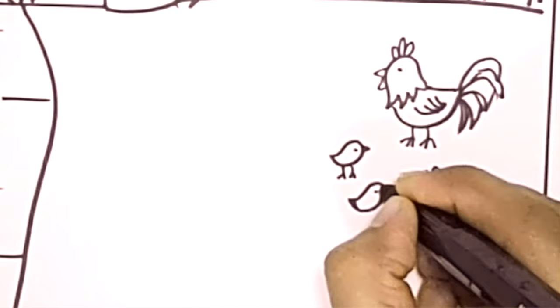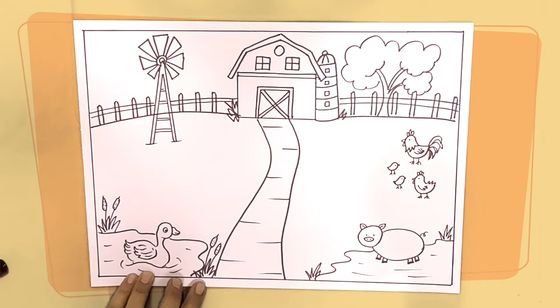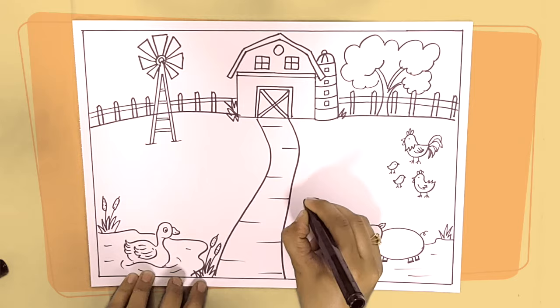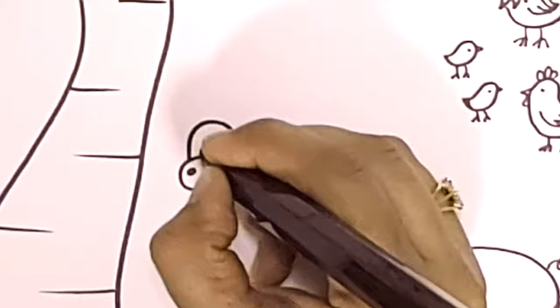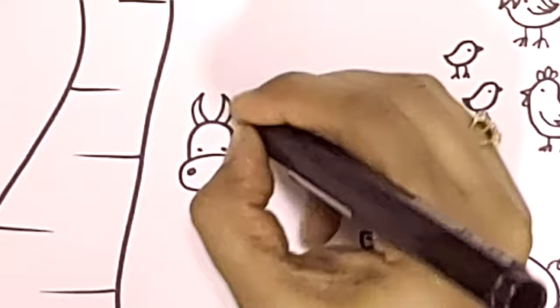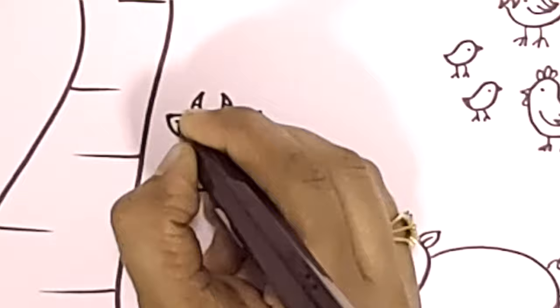These are tiny chicks. If you wish, you may add some eggs nearby. Next we will be adding a cow. I'm keeping the cow on the right-hand side — we start with the oval mouth with nostrils and eyes on the top, horns and ears.